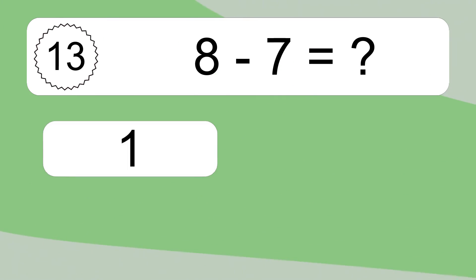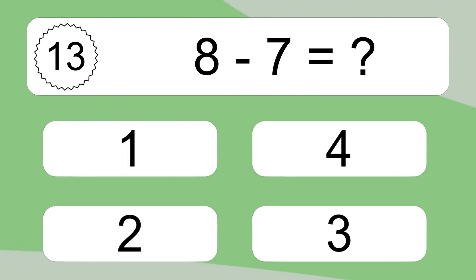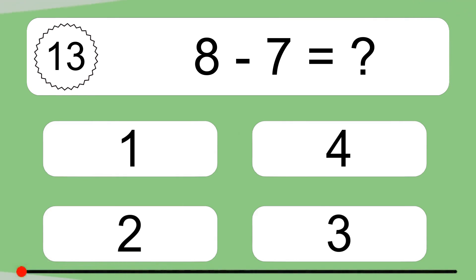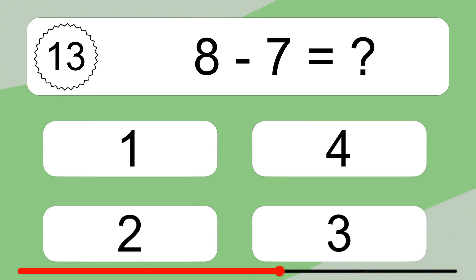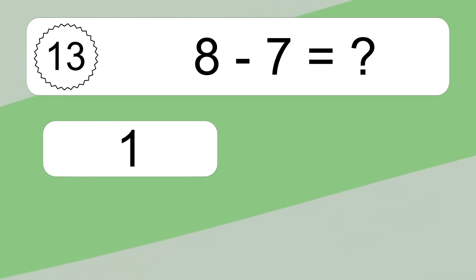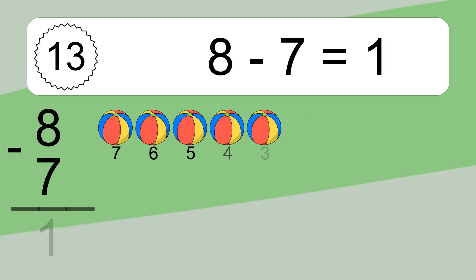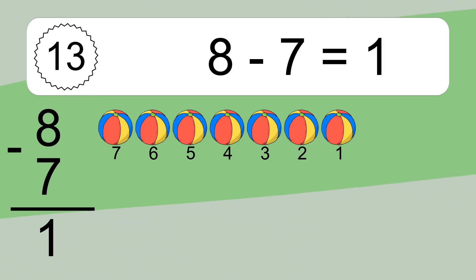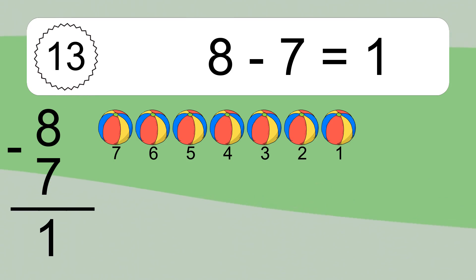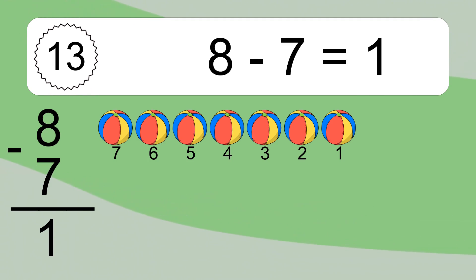8 minus 7 equals 1. Let's count it: 7, 6, 5, 4, 3, 2, 1.